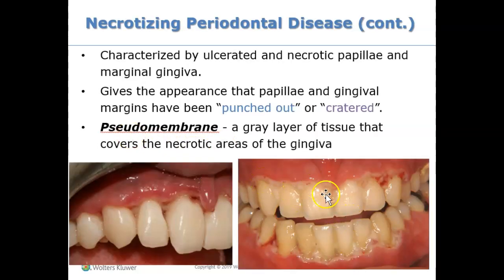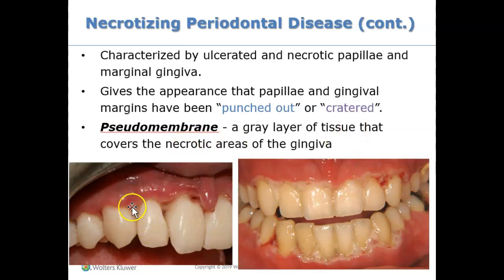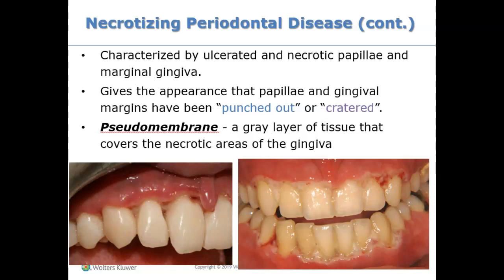Remember the pseudomembrane — it's like a gray layer of tissue that covers the dying, necrotic areas of the gum. If you look at the papilla, it looks cratered, punched out, or scooped out, like there's no papilla there. That is typical of necrotizing periodontal diseases — sometimes you don't see any papilla at all.